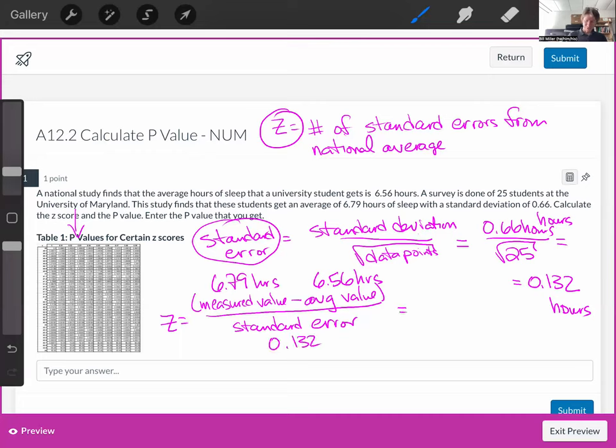It's going to be 6.79 minus 6.56, divided by 0.132. I get 1.74, and that number is the standard errors away from the average, from the national average.